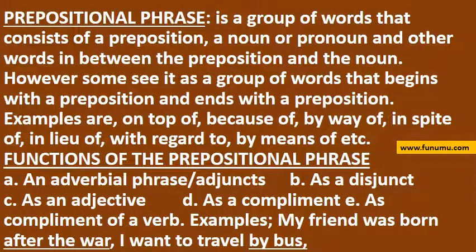Prepositional phrase. A prepositional phrase is a group of words that consists of a preposition, a noun or pronoun, and other words in between the preposition and the noun. Some see it as a group of words that begins with a preposition and ends with a noun. Examples are: on top of, because of, by way of, in spite of, in lieu of, with regard to, by means of, etc.